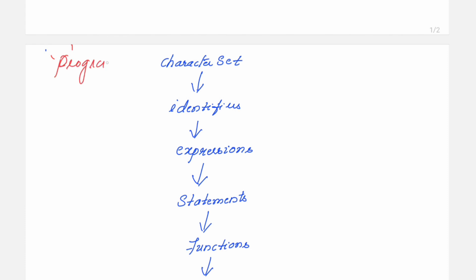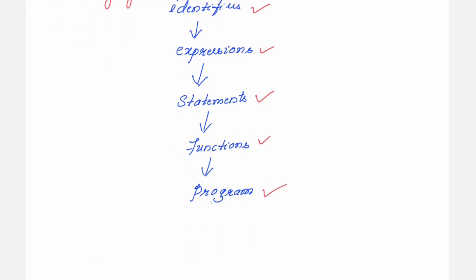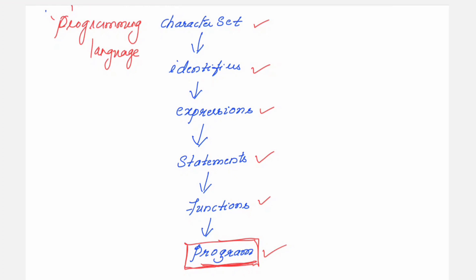This applies to any programming language. First you should know the character set of C, then using that you form identifiers, identifiers are converted into expressions, using expressions you form statements, using statements you form functions, and using functions you write the program. Just like in natural language you learn from alphabets, words, sentences, grammar, paragraphs, and finally the essay — same way here you learn the various components and then write a program.